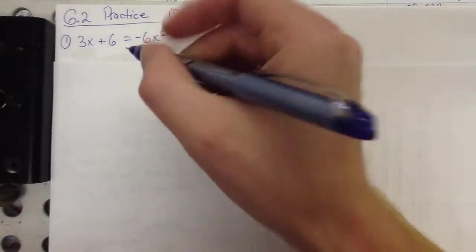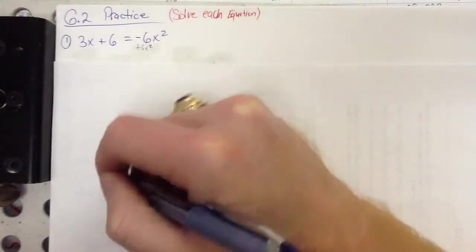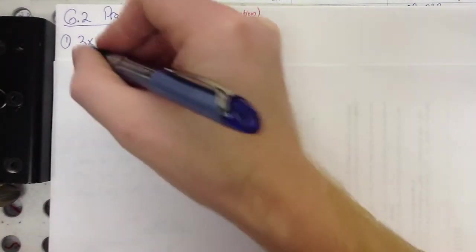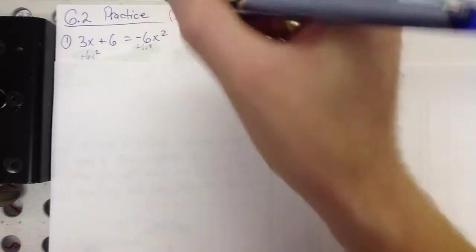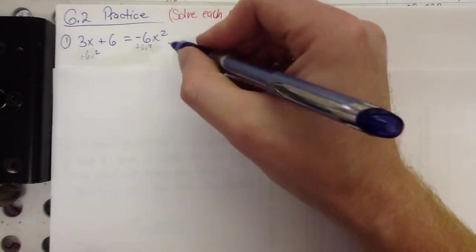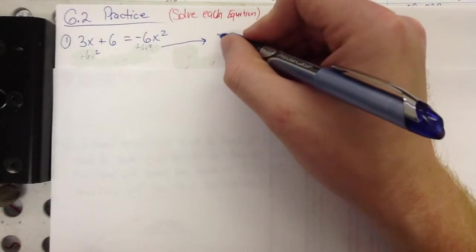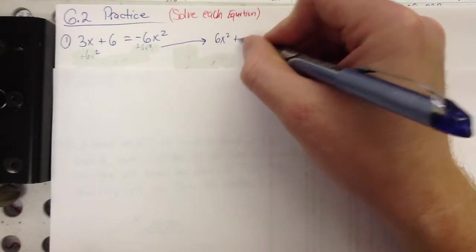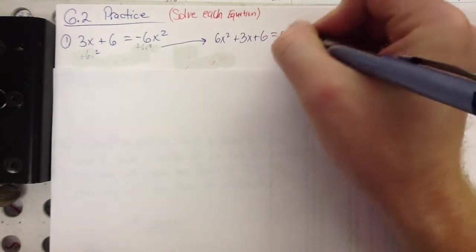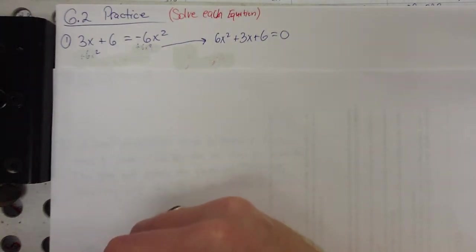So first thing I need to do is add 6x squared to both sides, alright? And I'm going to kind of run out of room so I'm going to come over here. So 6x squared plus 2x plus 6 equals zero. And now we'll go to the calculator.